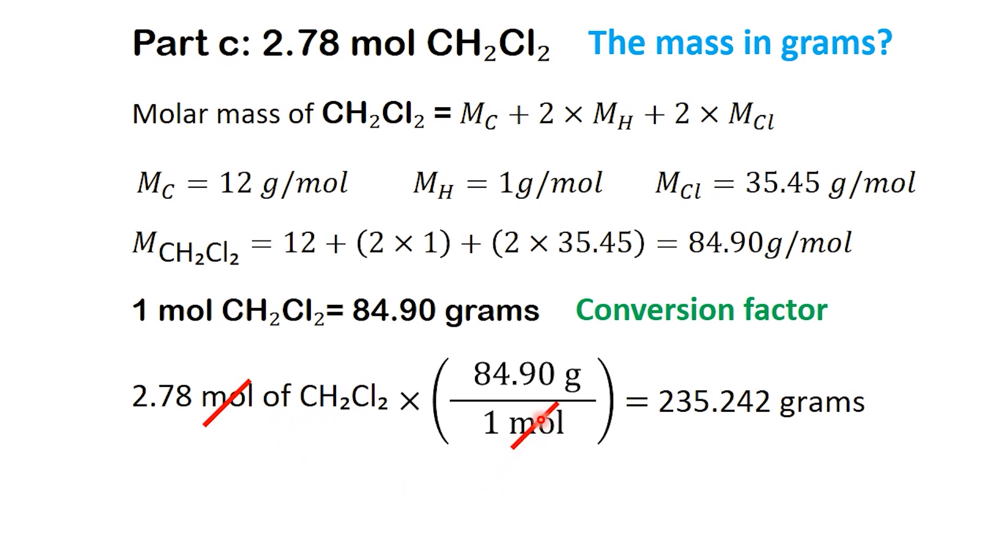Notice how the unit mol appears once in the numerator and once in the denominator, so it cancels out. That leaves us with grams, which is exactly what we want. Now, we multiply the numbers. And we arrive at our answer: 2.78 moles of CH2Cl2 is equal to 236.0 grams.